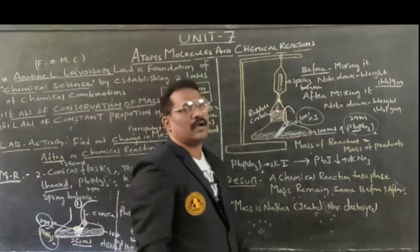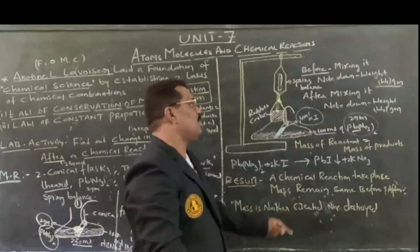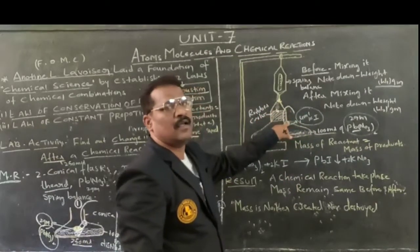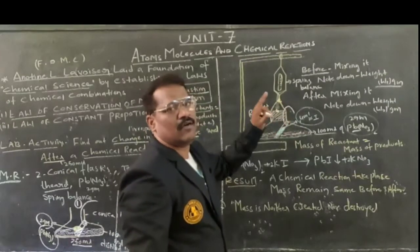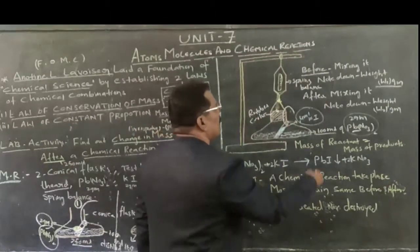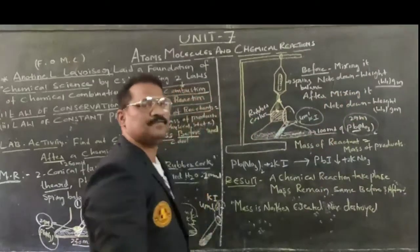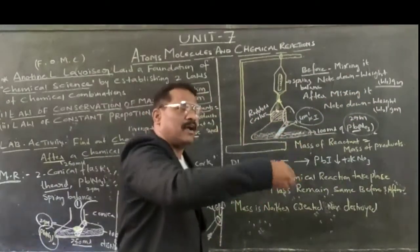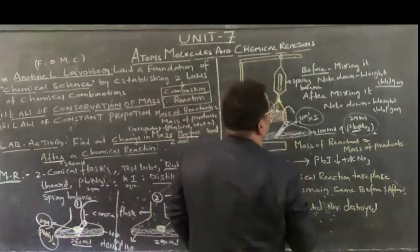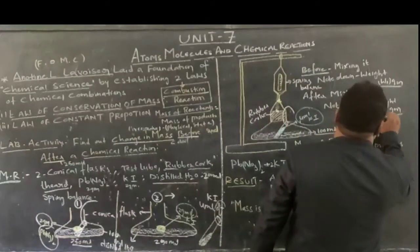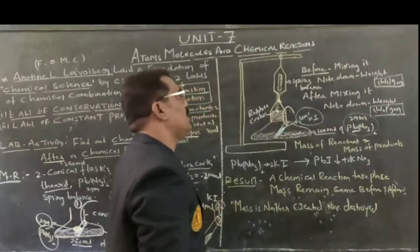Then afterwards, allow the liquids to begin mixing up, so that the liquid existing in the test tube can be easily mixed up with the liquid existing in the conical flask. Lead potassium iodide will begin mixing up with lead nitrate. Mix the liquids by shaking the conical flask. And again, note down the weight after mixing it up. Let that weight be W2 grams. The first weight is W1 grams, the second is W2 grams.